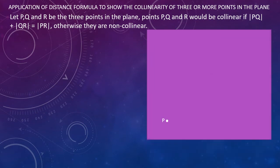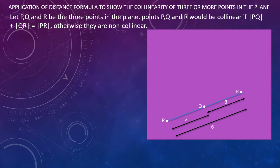Let us see how. Here we have three points P, Q and R. If we join them, the distance PQ when added to the distance QR will give you the distance PR. For example, if this distance is 3 and this one is 3, adding them gives PR as 6. On the other side, if the points P, Q and R are non-collinear they will form a triangle. For example, if the side PR is 3 and the side QR is also 3, adding these two sides gives 6, and the sum of these two sides will be greater than the third side.